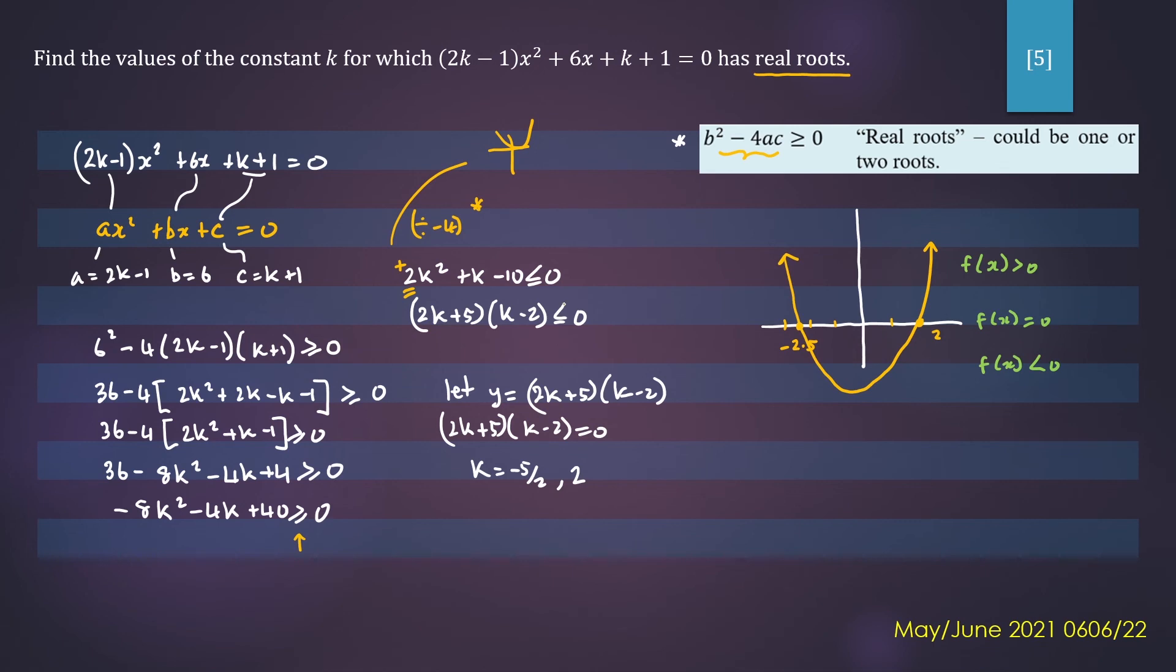Notice in the question, it's asking where is your function less than or equal to 0. So that will include your x-intercepts and anywhere in between the x-intercepts. This is where your function is negative.